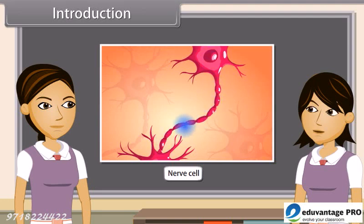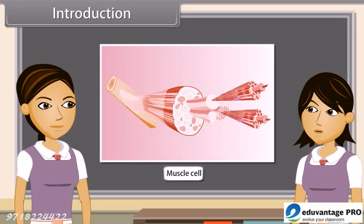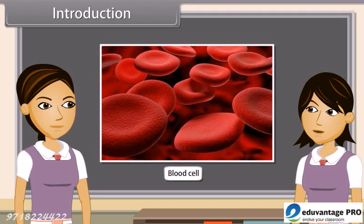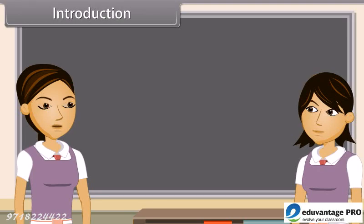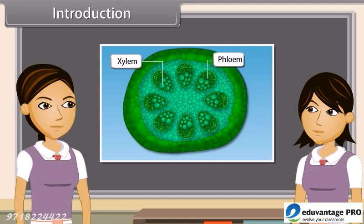Nerve cells carry messages from the brain to every part of the body. Muscle cells contract and relax so that movements are caused. Blood flows to transport oxygen, food, hormones, and waste materials. Plants are also living organisms — xylem and phloem cells conduct food and water from one part to another. In multicellular organisms, there is division of labor, meaning a particular function is carried out by a group of cells at a definite place in the body. This group of cells is called tissue, which is arranged and designed to provide efficient specialized function.